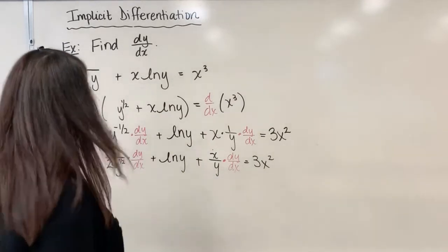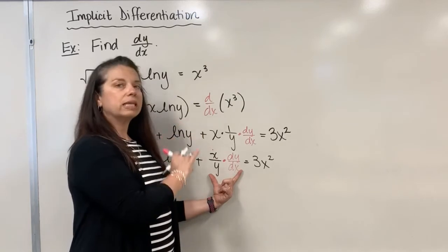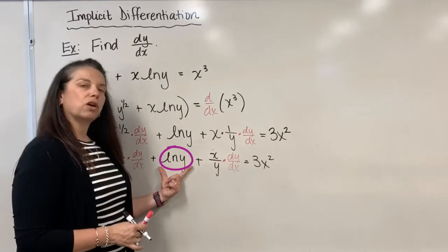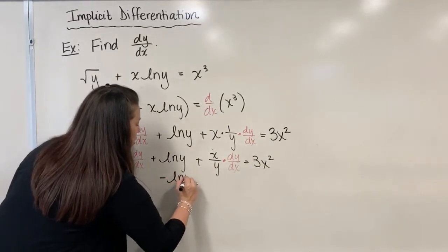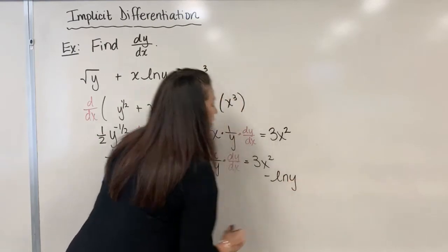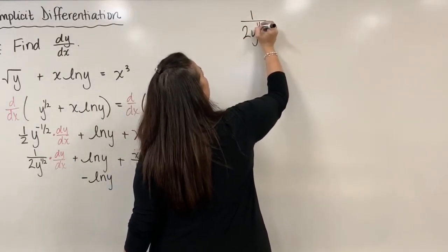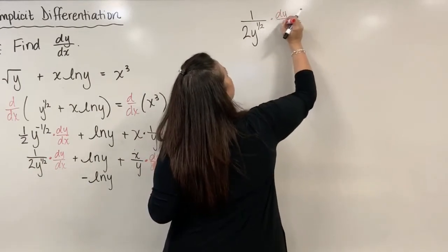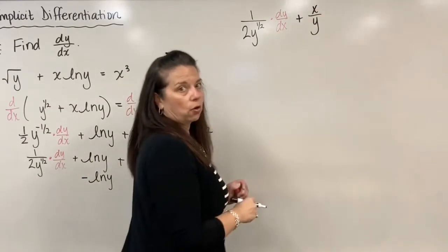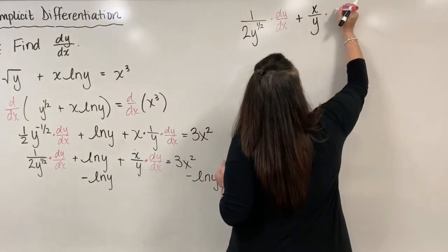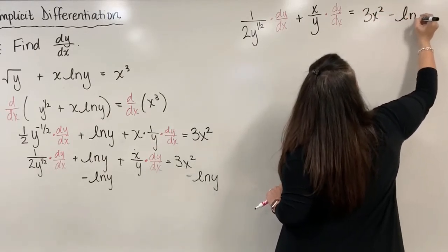Next, we notice that two terms on the left contain dy/dx, but natural log y does not. So we subtract natural log y from both sides. After doing so, the left side becomes: 1 over 2y to the one-half times dy/dx, plus x over y times dy/dx. The right side is now 3x squared minus natural log of y.